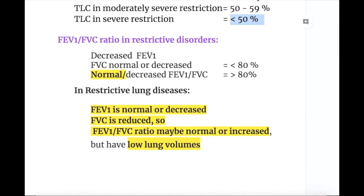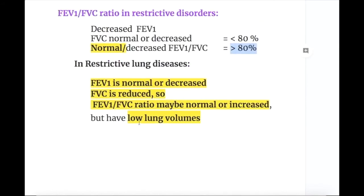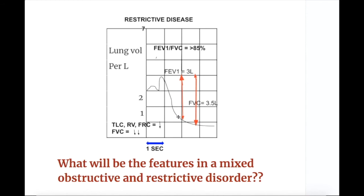In restrictive disorders, FEV1 is decreased but FVC may be normal or decreased to less than 80%. The FEV1 to FVC ratio may be normal, increased, or greater than 80%. For example, if FEV1 is 3 liters and FVC is 3.5 liters, the ratio is more than 85% — increased. The lung volumes TLC, RV, and FRC are all reduced, and FVC is reduced more than others, which is why the FEV1 to FVC ratio may exceed normal.